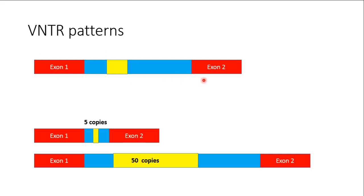To understand this, let us assume there is a gene with exon 1 and exon 2, and an intron region in which we have a VNTR — it could be AT AT AT repeats or GGA GGA repeats. If a person has five copies of these repeats, the distance between exon 1 and exon 2 will be small. If the person has 50 copies, the distance will be larger. But during protein synthesis, the introns get spliced and the exons join together, so the VNTRs do not affect the final protein formed.